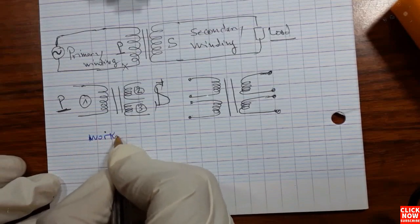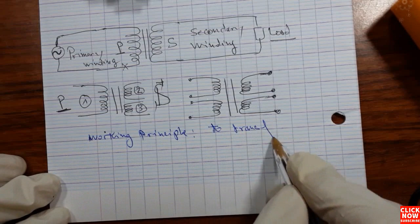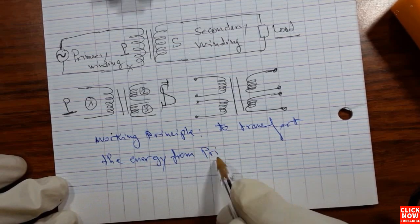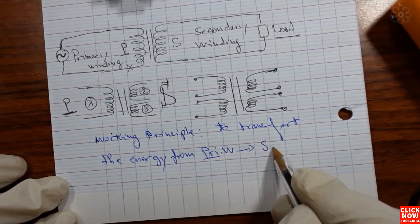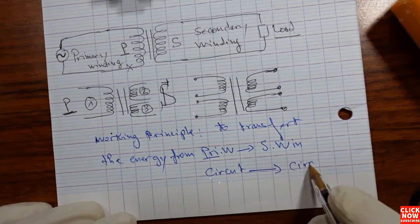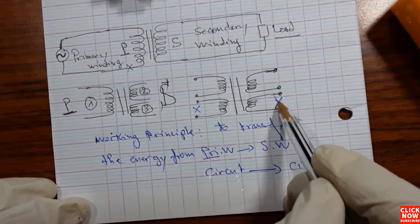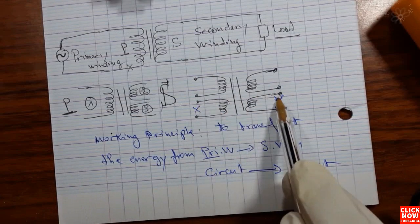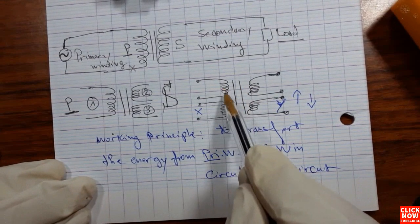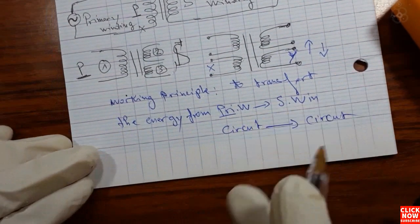The working principle of transformers is to transfer the energy from the primary winding to the secondary winding, or from one circuit to another circuit. This is the main working principle of the transformer — it will transfer an input energy X to an output energy Y. The output energy can be increased or decreased depending on the type of transformer and the number of turns in each winding.